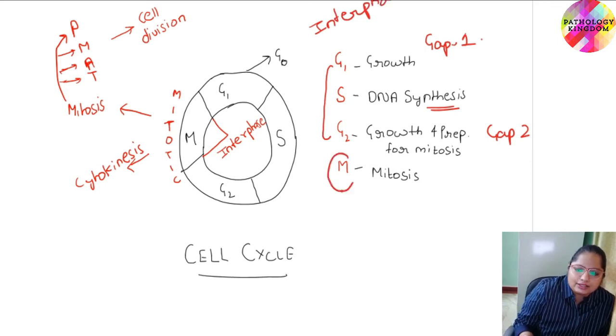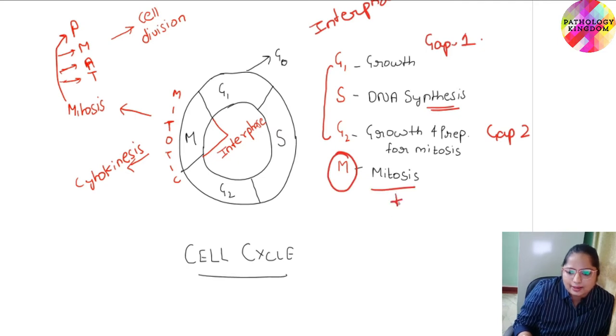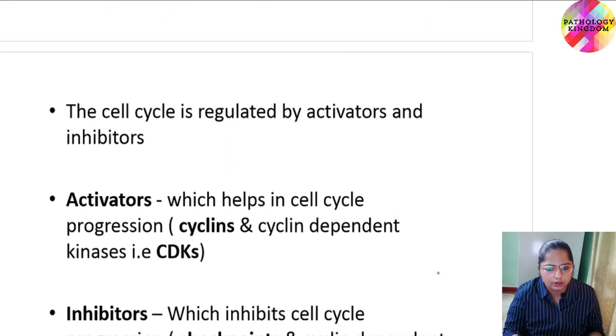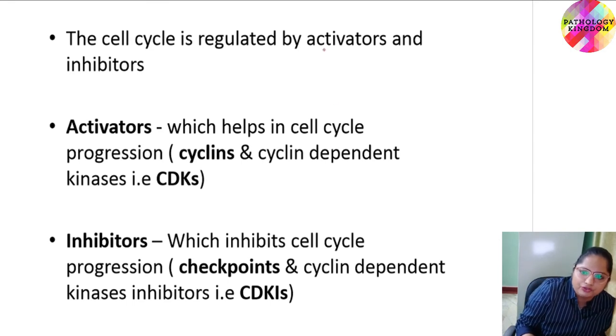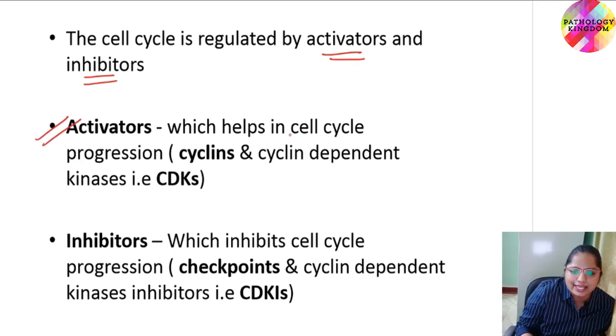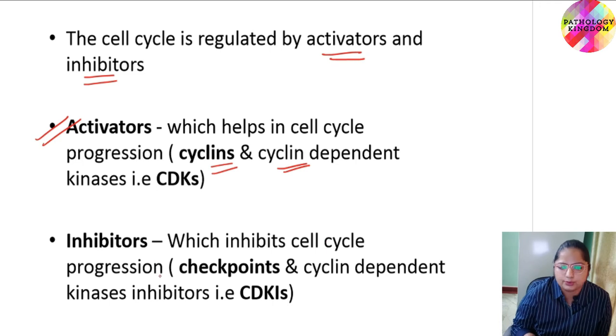M phase comprises mitosis and cytokinesis. There is one more phase, G0 phase, known as resting phase. It may be temporary or permanent. Now the cell cycle is regulated by various activators and inhibitors. Activators help in cell cycle progression. Examples are cyclin and cyclin dependent kinases, CDKs. Inhibitors inhibit cell cycle progression. Examples are checkpoints and CDKIs, cyclin dependent kinase inhibitors.